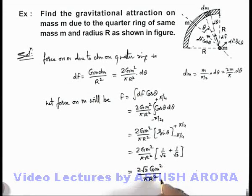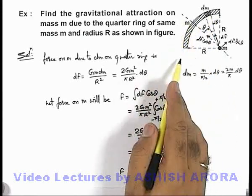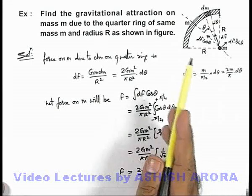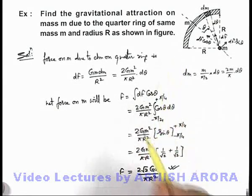So the final result we're getting is 2√2 Gm²/(πR²), that is net force acting on this point mass due to the whole mass which is distributed in the quarter ring. So this will be the answer to this problem.